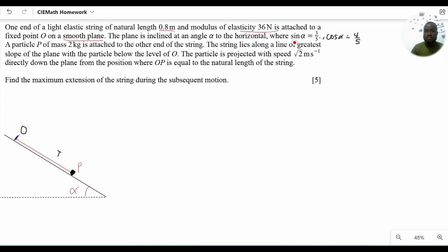The plane is inclined at an angle of alpha. This is the mass of P. The initial velocity of P when it was projected down is the root of 2 meters per second. Our work is to find the maximum extension of the string during the subsequent motion.